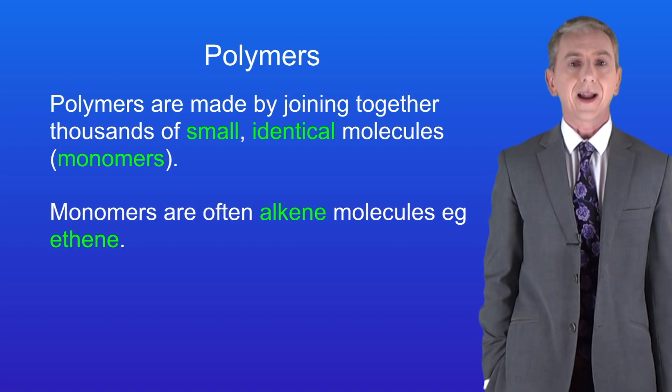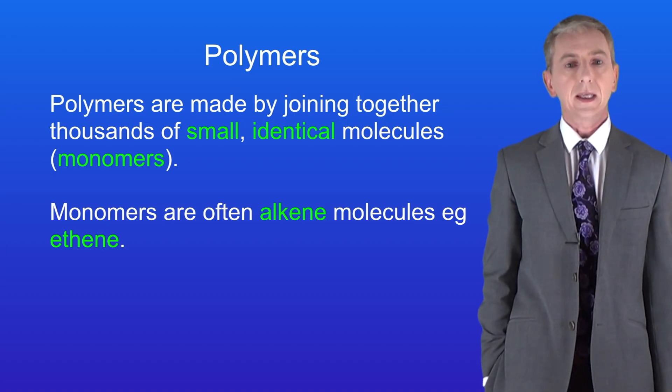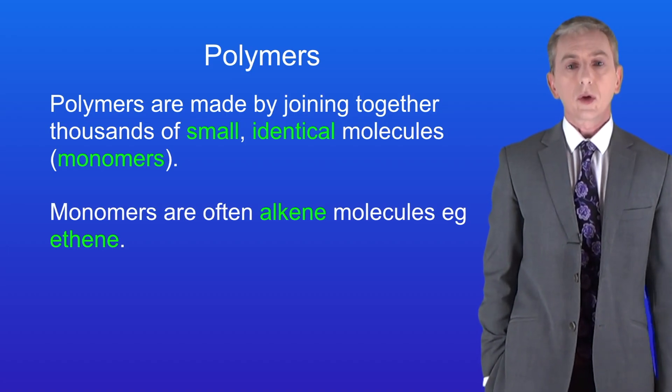Monomers are often alkene molecules and we're going to find out more about these in the organic chemistry topic. A good example of an alkene is ethene which I'm showing you here.